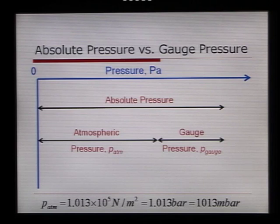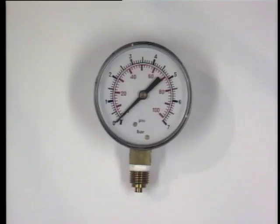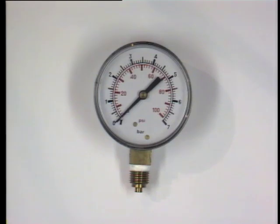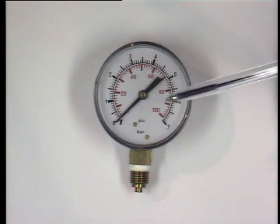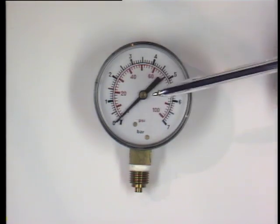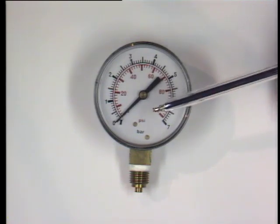So if we take a look at a gauge that I have here, we can see that even though the atmospheric pressure is about 1 bar, that the dial here is reading zero. This is gauge pressure, which is zero, which means that atmospheric pressure is not included. The absolute pressure here would be the reading on the dial plus the atmospheric pressure.